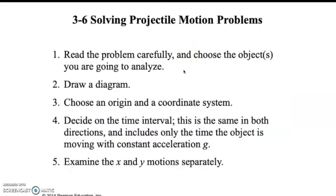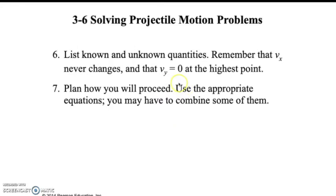Read the problem carefully and draw a diagram. Choose an origin and coordinate system — the origin should always be where the object starts movement, with up and to the right positive, and down and to the left negative. The time interval is the same in both x and y, so once you find it, you can apply it to both. List what you know: vx never changes, and vy equals zero at the highest point. Then make a plan — use the equations and keep them separate, solving for what you can.